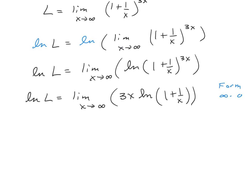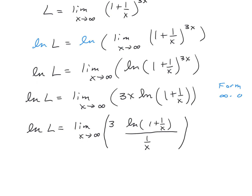So copying down what we have so far, ln(L) equals the limit as x goes to infinity, and we're going to leave that 3 out front. We'll have the natural log of 1 plus 1 over x in the numerator, and 1 over x in the denominator. The natural log of 1 plus 1 over x is approaching 0 because the natural log of 1 is 0, and 1 over x is going to 0 since x is going to infinity. We finally have a 0 over 0 form to apply L'Hôpital's rule.